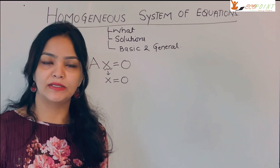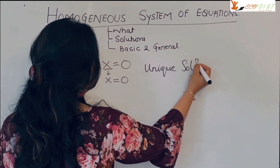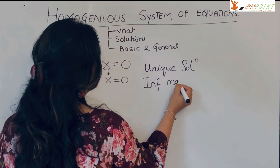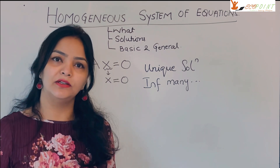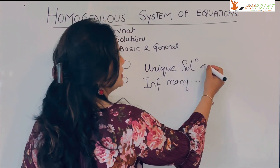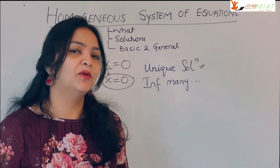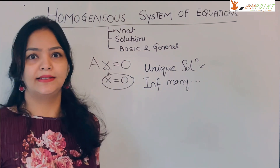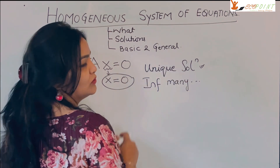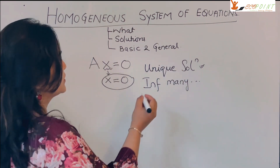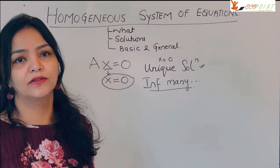When it comes to homogeneous system of equations, there are two solutions possible: unique solution and infinitely many solutions. No solution is not a possibility at all since x = 0 is always a solution. So if I tell you this homogeneous system has a unique solution, can you tell me what it will be? It will be x = 0. If it always has x = 0 and that is the unique solution, then that has to be x = 0. Any other solution would fall into the category of infinitely many solutions.